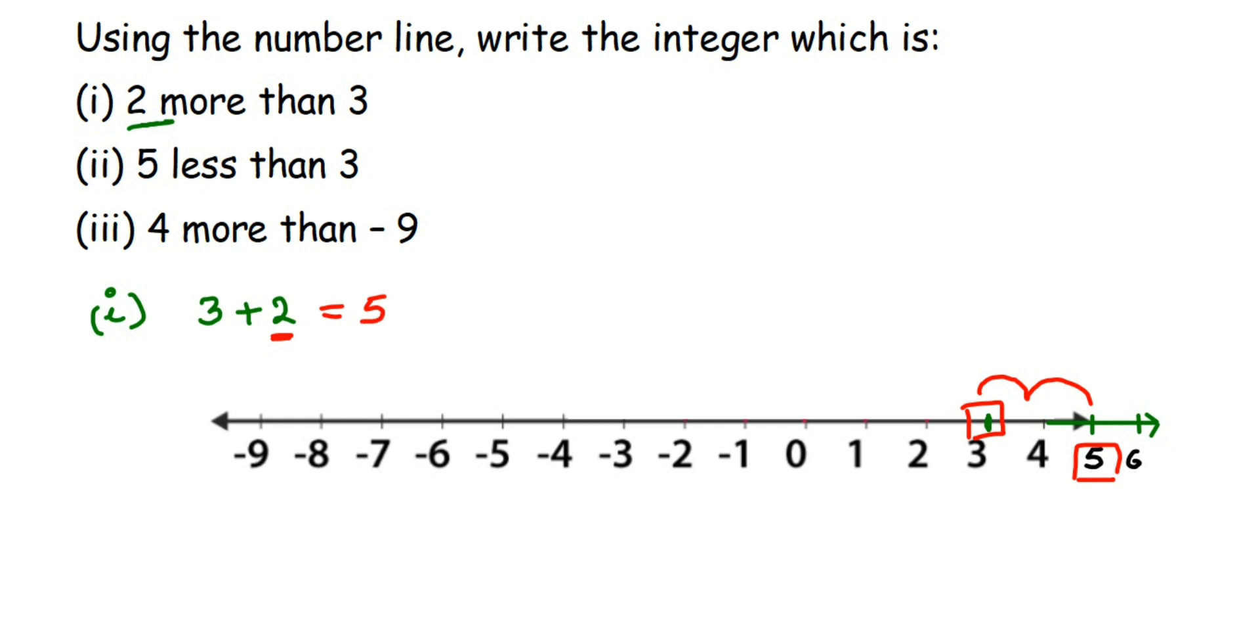Then second one. So let me erase this. So second one we have 5 less than 3. So we have 3. So from 3 it's 5 less. It will be 3 minus 5.